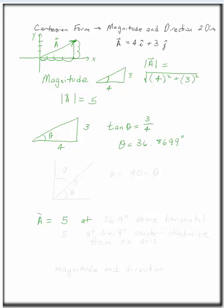A is 5 at 36.9 degrees above the horizontal. Or you can say at 36.9 degrees counterclockwise from the positive x axis.